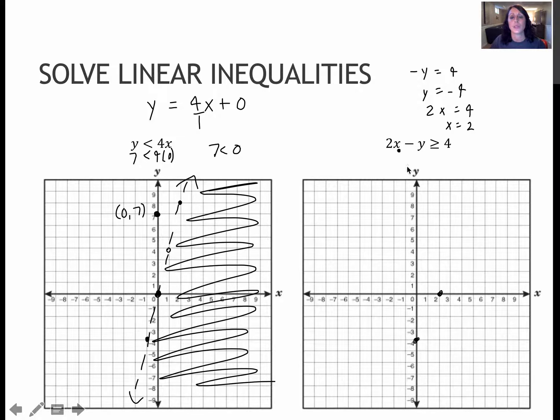Again, the other way is to rearrange it. I would have negative y is greater than or equal to negative 2x plus 4, and then y is less than or equal to 2x minus 4. And that would mean minus 4, up 2 over 1, up 2 over 1, etc.